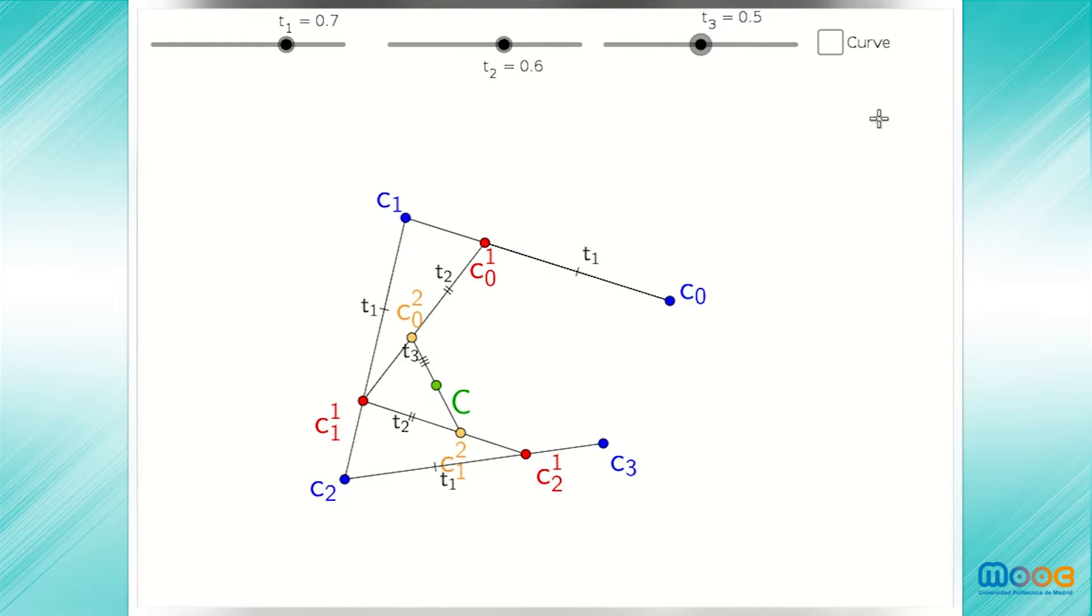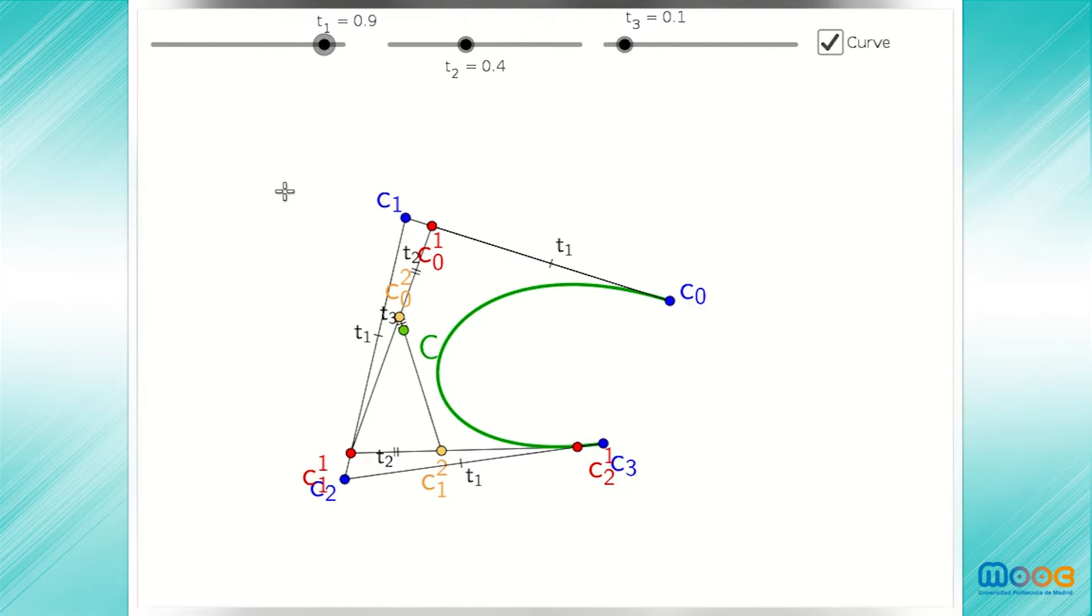When these values are different, they won't in general lie on the cubic Bezier curve. For instance, as we take t sub 3 to be very small, we see that the green point is actually quite far from the curve.